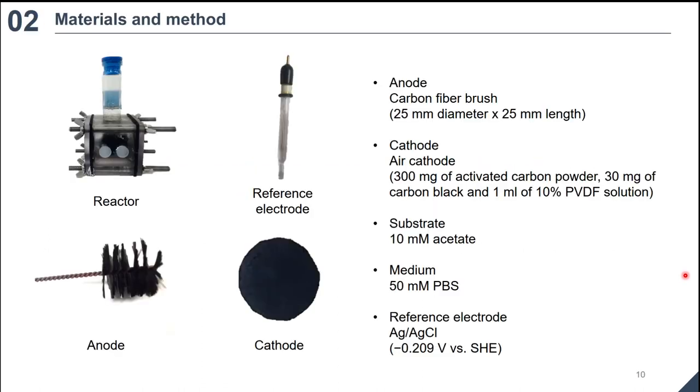Materials and method. The MFC reactor was constructed from polycarbonate cut to produce a cylindrical chamber 4 cm long by 3 cm in diameter. A brush anode was made from carbon fibers twisted between two titanium wires. Before using, brush anode was heat treated 450 degrees for 30 min in a furnace. Air cathodes were made of stainless steel mesh spread with the 300 milligram of activated carbon powder, 30 milligram of carbon black, and 1 milliliter of 10% PVDF solution of the catalytic mixture. How to make it is detailed in our previous video.